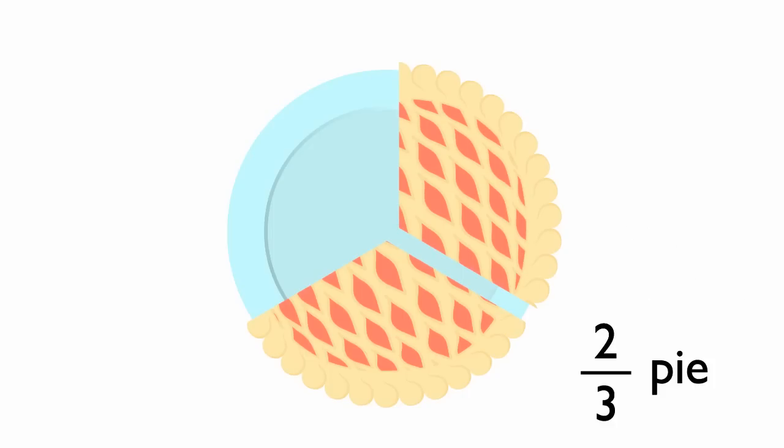The pie was divided into three slices total. 1, 2, 3. This number becomes the denominator, the number on the bottom.